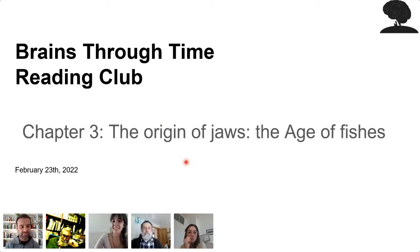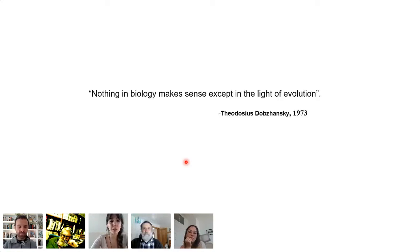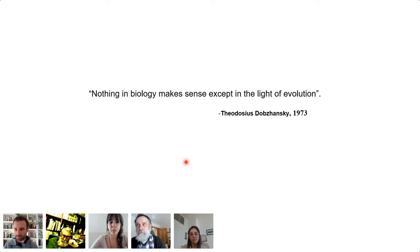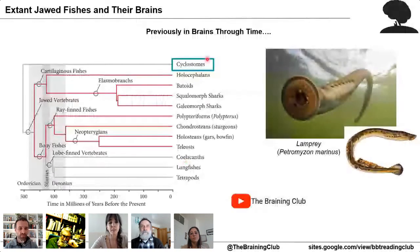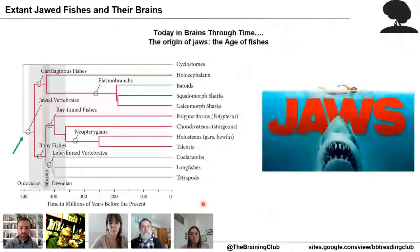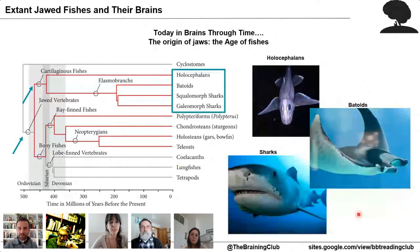Thank you, welcome everyone. I wanted to start with a quote that I assume everyone here would agree with: nothing in biology makes sense except in the light of evolution. So let's see if we can shed some light on evolution of the brain and how it can help us to understand it better. In the last chapter we talked about cyclostomes, lampreys and hagfishes, the most basal extant vertebrates. Today we are going to go to the next step: gnathostomes, or jawed vertebrates, which include a myriad of species.